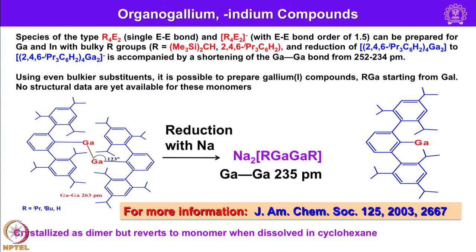Species of the type R2E2 having a single bond and R4E2 with E–E bond order of 1.5 can be prepared for both gallium and indium with very bulky R groups like trimethylsilylmethyl or 2,4,6-triisopropylphenyl. Reduction of the gallium compound is accompanied by shortening of the Ga–Ga bond from 250 to 234 pm — a normal Ga–Ga single bond distance is 252 pm, so 234 pm indicates multiple bond character. Using even bulkier substituents, it is possible to prepare a gallium(I) compound with coordination number one, RGa, starting from gallium iodide, though no structural data are yet available.